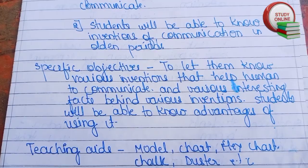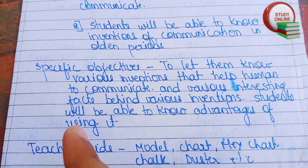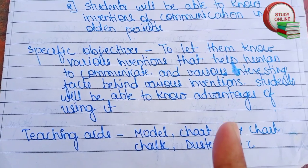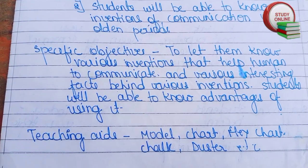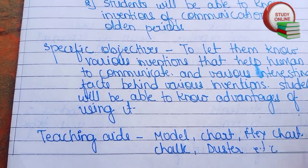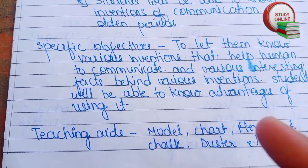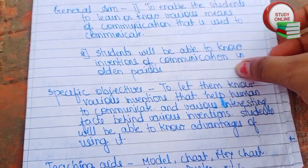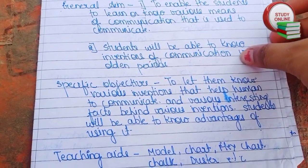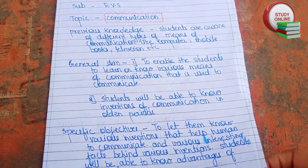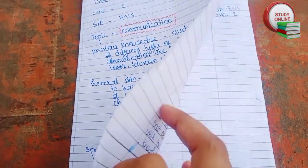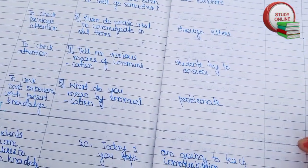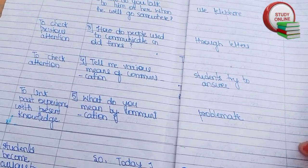For specific objectives, you can write things like we basically want to tell them about inventions and all those things. For teaching aids, we write whatever teaching aids we are going to use while teaching students — we have to write all those things here.